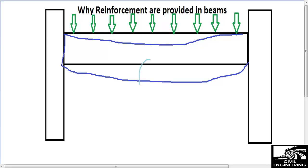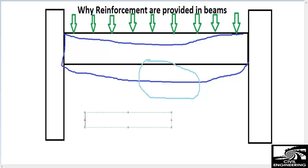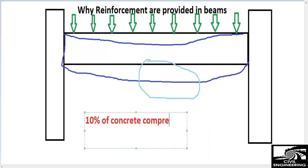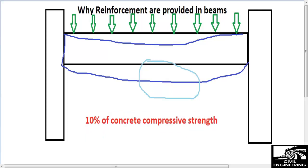It will deflect more in the bottom because concrete is weak in tension. This is the property of concrete — it is really strong in compression to resist compression forces compared to tensile stresses. The tensile strength of concrete is only ten percent of its compressive strength. So if a concrete has a compressive strength of 3,000 psi, its tensile capacity is only 300 psi.